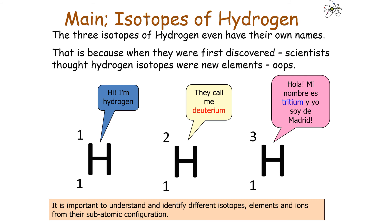It's important to know that the three isotopes of hydrogen have their own names, because they were discovered before we realised isotopes existed — so we thought they were new elements. We have hydrogen, deuterium, and tritium. They are all isotopes of hydrogen as they all contain one proton, but they have different numbers of neutrons: hydrogen has zero neutrons, deuterium has one neutron, and tritium has two neutrons. It's important to be able to identify different isotopes, elements, and ions from their subatomic configuration.